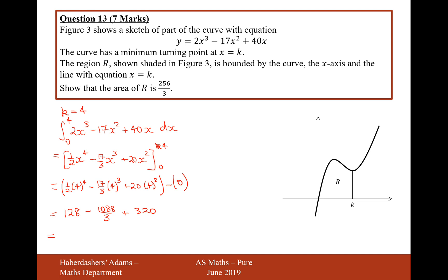So, now let's add all these bits together: 128, minus the fraction 1088 over 3, and then add 320, and that gives us, yes, 256 over 3. And there we are, that's the answer for question 13. There's 7 marks for that one.